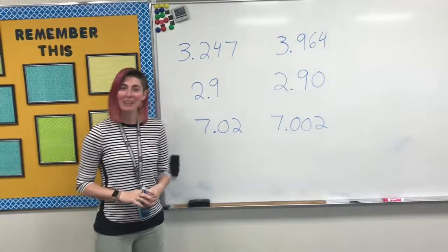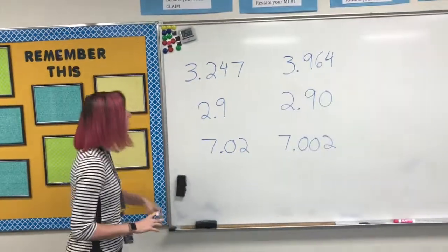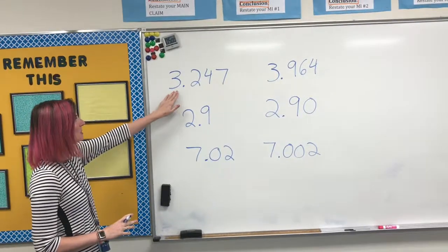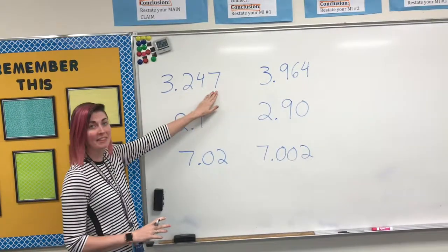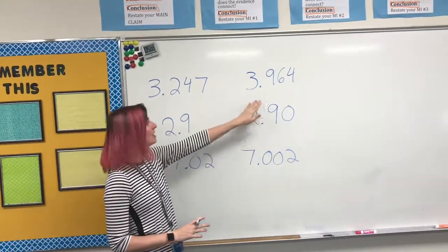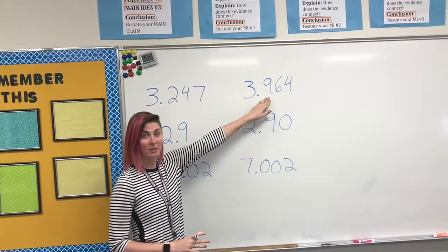In this video, we're going to be comparing decimal numbers. So for our first example up top, we have 3 and 247 thousandths, and we're comparing that to 3 and 964 thousandths.